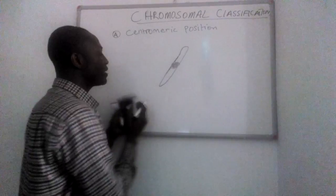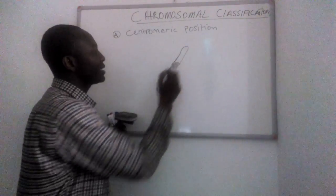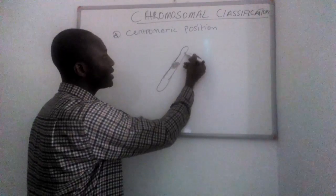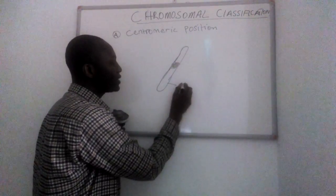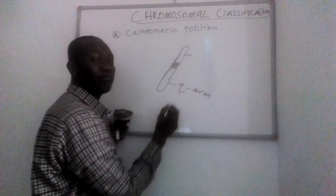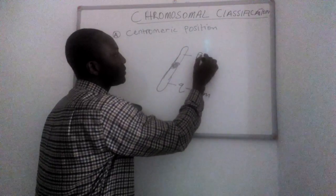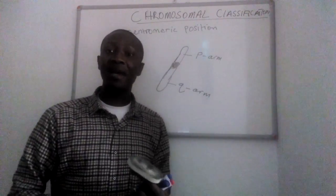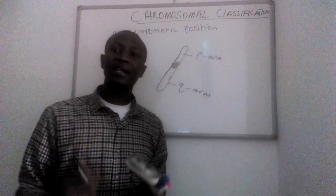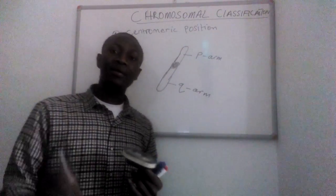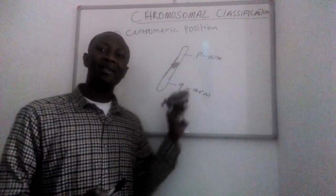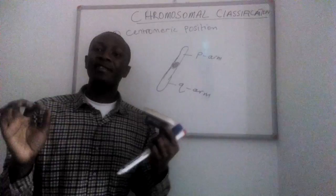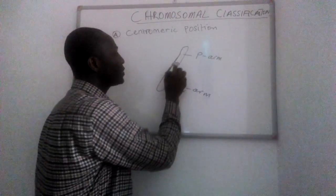Every chromosome has two main parts. We call one the P arm and the other the Q arm. Normally the longest arm we call the Q arm, and the shorter one we call the P arm. To keep this in mind — if you count in alphabetical order, you reach P before Q, so P is the short arm and Q is the longest one. Apart from these two arms, every chromosome has a center point where the two arms are joined, and this is what we call the centromere.